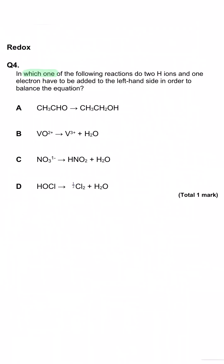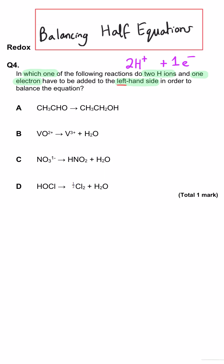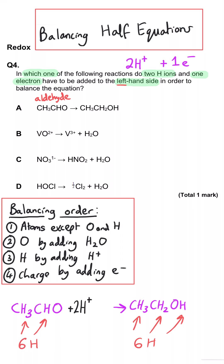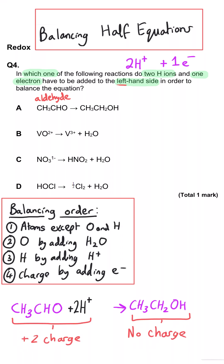In which one of the following reactions do two hydrogen ions and one electron have to be added to the left-hand side to balance the equation? In A, we've got an aldehyde on the left with two fewer hydrogens than the alcohol on the right, so we need to add two hydrogen ions to the left-hand side. But to balance the charge, we need to add two electrons, so A is not right.